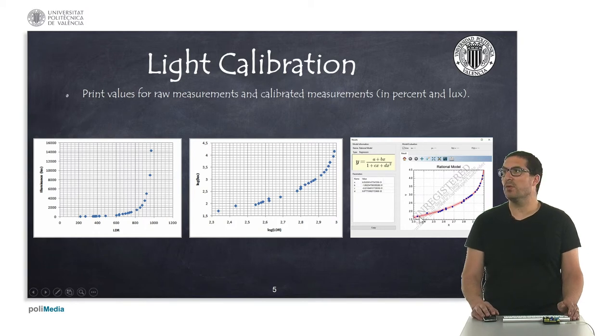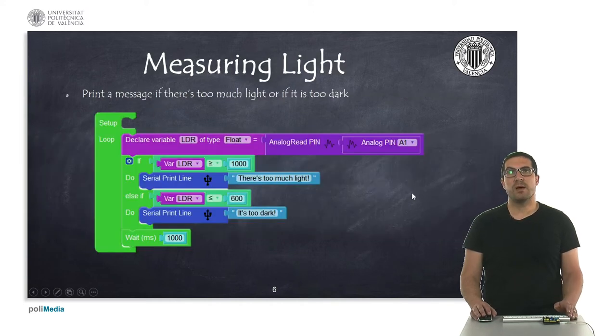This is the process for curve calibration. It means that whenever we get a value in terms of luxes here, or the raw value in a log scale, then we will get the same value, but represented in luxes also in log scale.